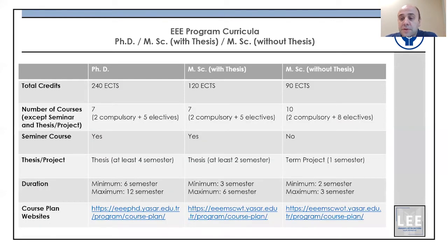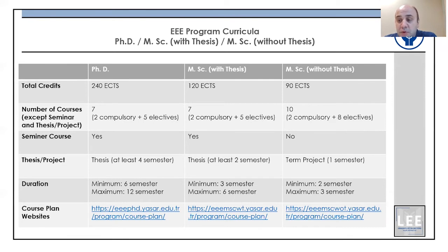This is a summary table about the differences between the PhD, master with thesis, and master without thesis. The master without thesis is a more compact, shorter-duration program with a higher number of courses but no real thesis — only a short-term project. The PhD and master with thesis are more academic programs where academic novelty is required, especially for PhD and partly for the master with thesis.